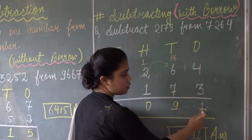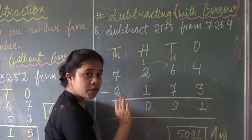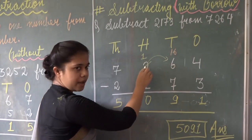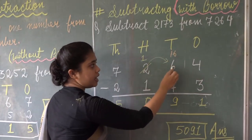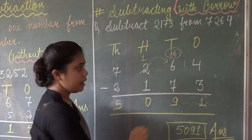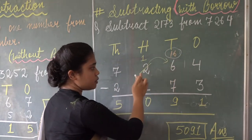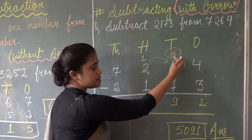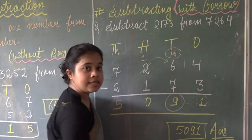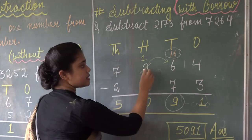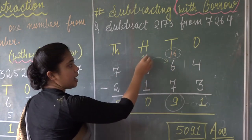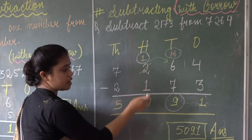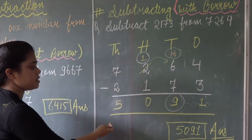When we subtract 3 from 4 the result is 1. Now we cannot deduct 7 from 6, so let us take it as a story. This 6 goes to 2 and asks for 1. When 6 borrows 1 from 2, it becomes 16. Now we subtract 7 from 16 and the result is 9. Since 2 gave 1 to 6, it becomes 1. We subtract 1 from 1 — that is 0. Then 2 subtracted from 7 — that is 5.